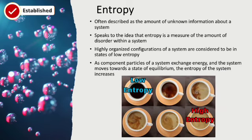The classic example used to describe entropy is adding milk to coffee. When milk and coffee are separate, there's a lot that you know about the configuration of the system — all the milk is in the carton, coffee is in the mug. So in this highly ordered configuration, there's very little unknown information about the system. As you start to pour that milk into the coffee, at first you can kind of tell where the milk is — it's not homogenous yet, not distributed evenly. Once you pour the milk in, you have less information about the configuration of the system than you did when the milk and coffee were separate.